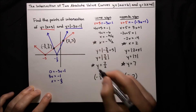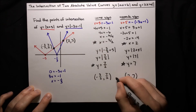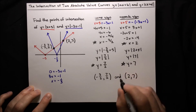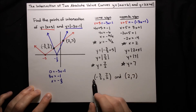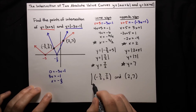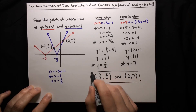So our overall solution — the points of intersection — are given by these two points: negative 3 over 2, 7 over 2, and 2 comma 7.